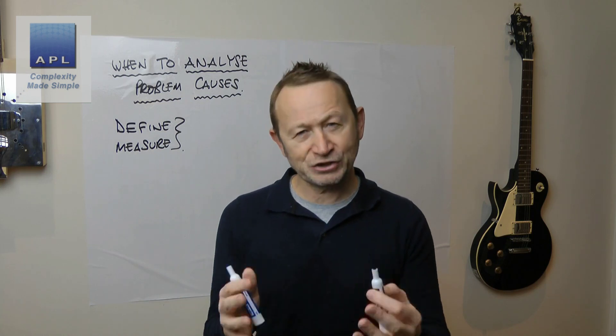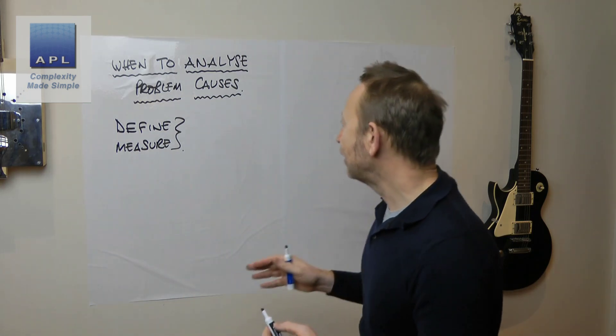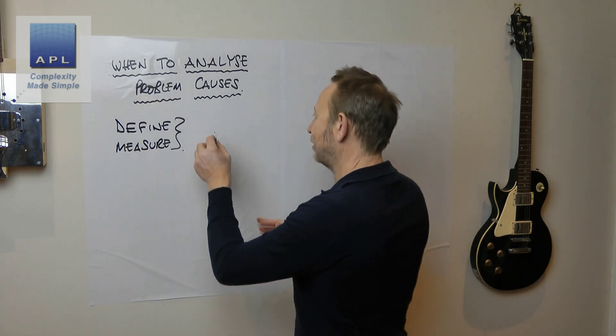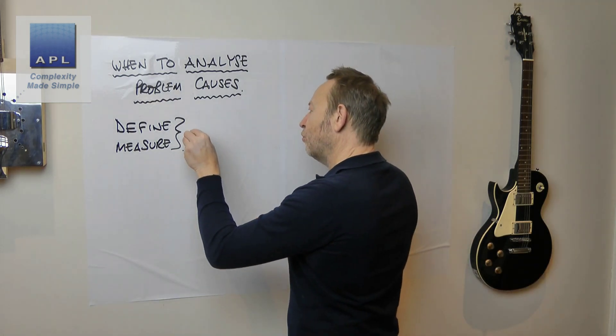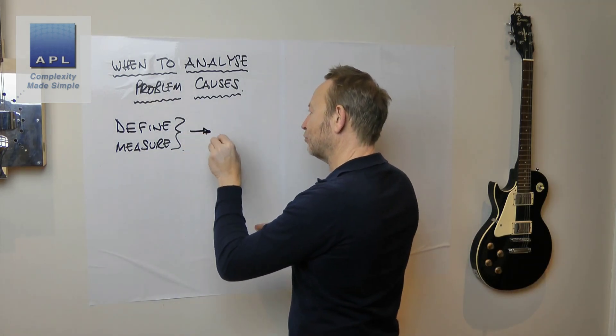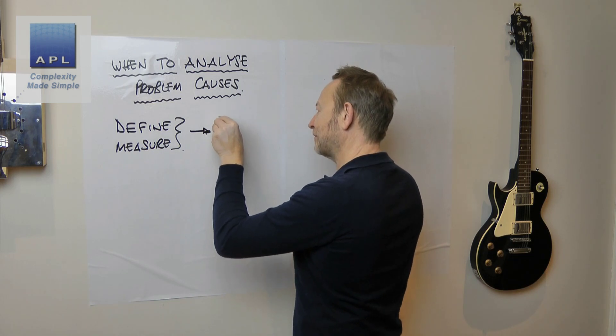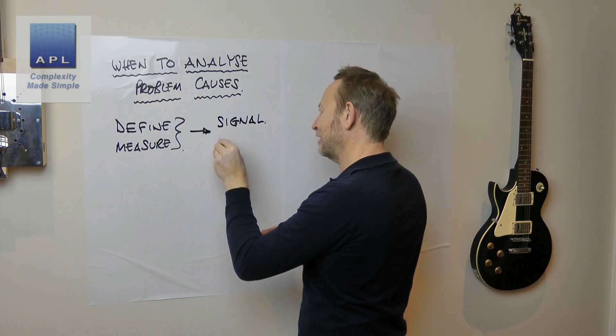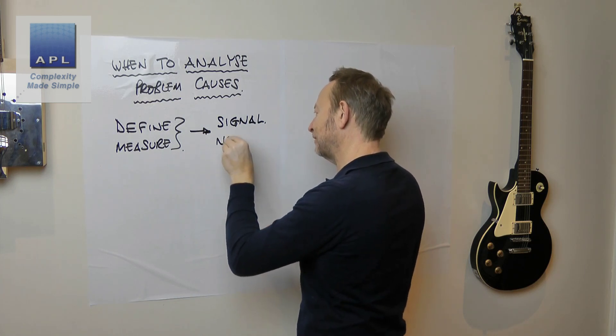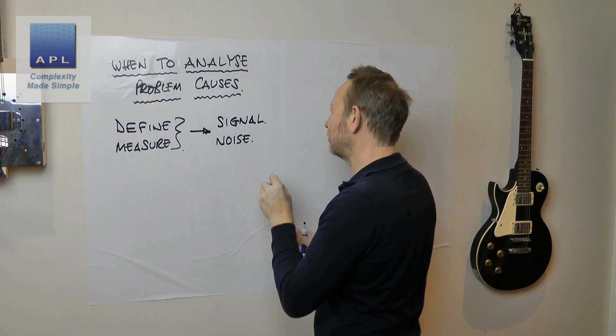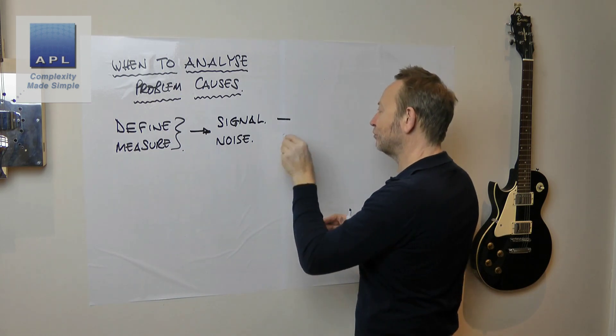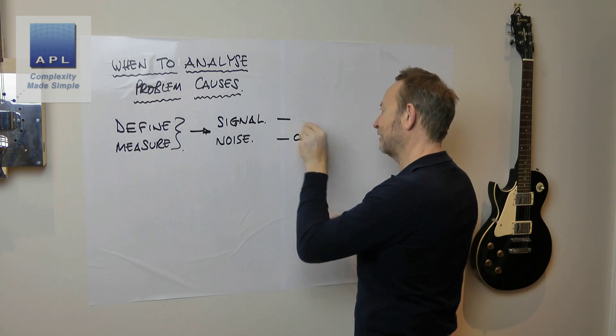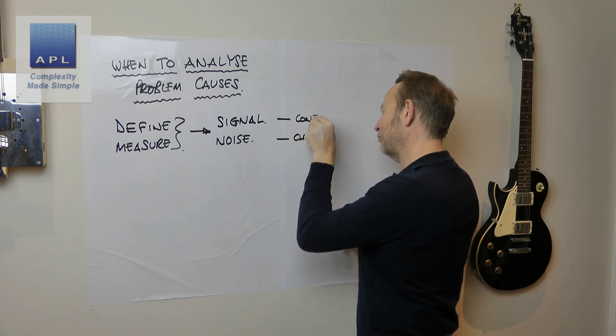There's some basic questions you need to be asking yourself. And one of the basic questions is, as far as my problem goes, what is my problem? Is it, if we talk statistically, is it a problem with the signal? Or is it a problem with the noise? I would also say, is it a problem with chaos? Or is it a problem with control?